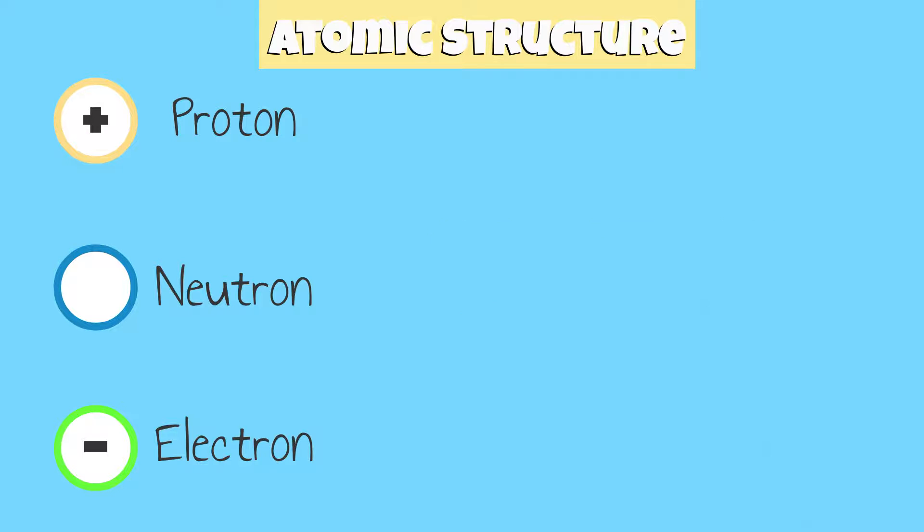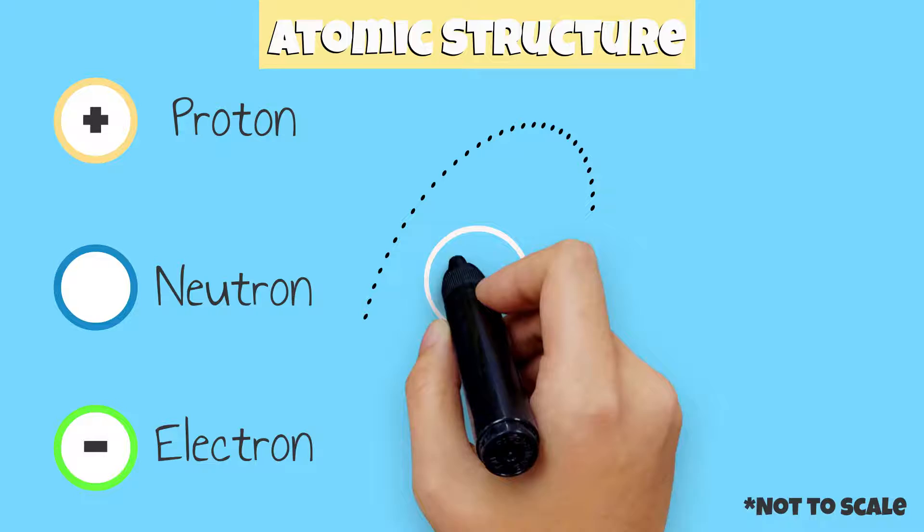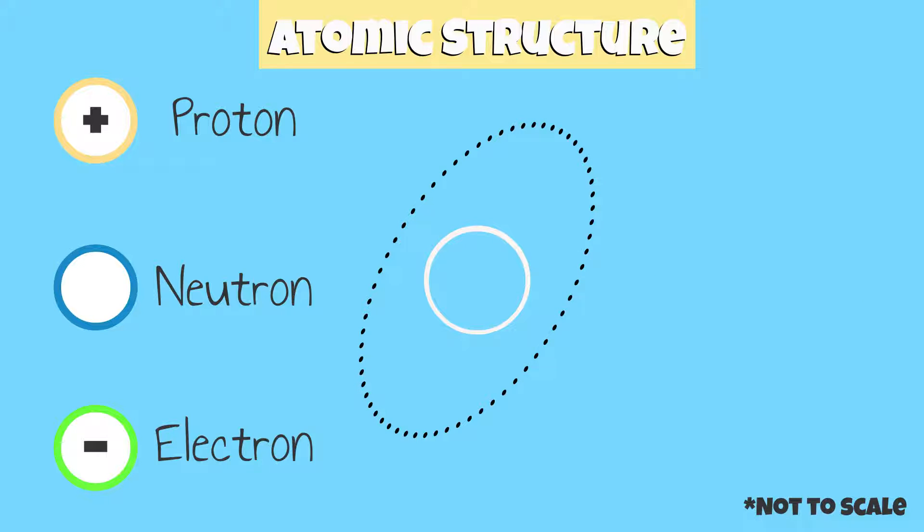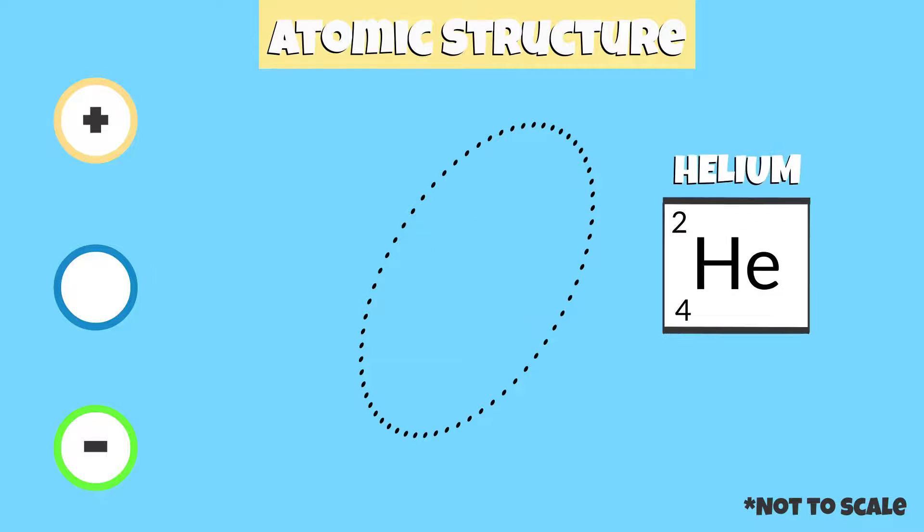An atom has a nucleus in the center and an electron cloud surrounding it. The protons and neutrons of an atom are in the nucleus, while the electrons are in the electron cloud that surrounds the nucleus.